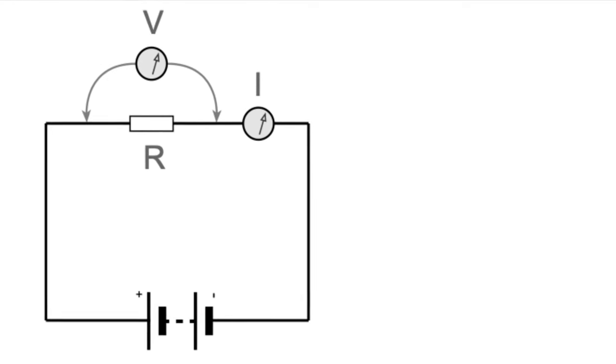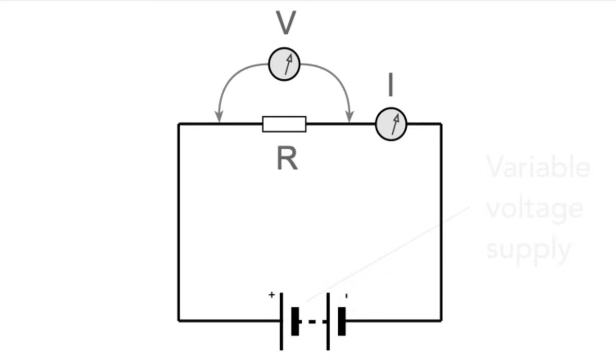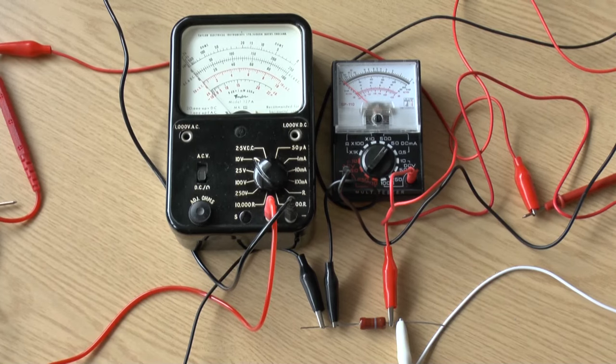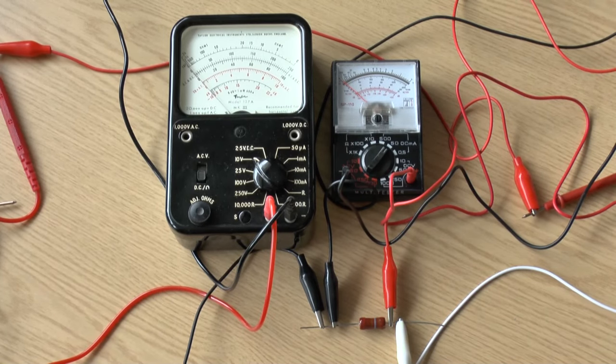To have a look at how this works in practice, we can set up a simple circuit where we measure the potential difference across an unknown resistor, and note the current that is flowing. Here's the actual setup, and although we've used two analogue multimeters, digital ones could be used just as well.